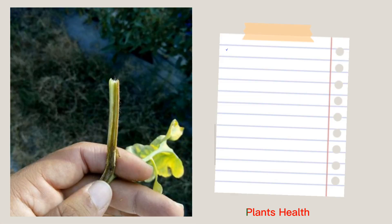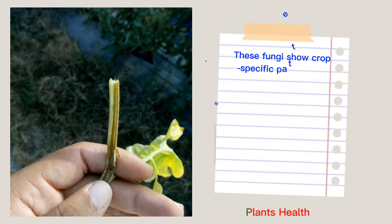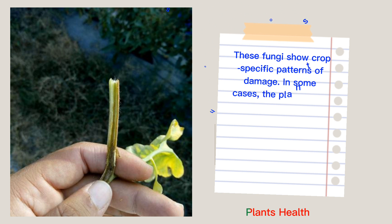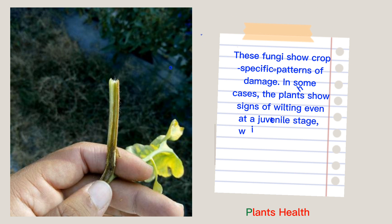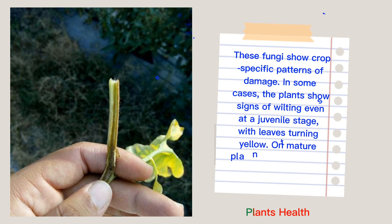Symptoms. These fungi show crop-specific patterns of damage. In some cases, the plants show signs of wilting even at a juvenile stage, with leaves turning yellow. In immature plants, a slight wilting often appears.